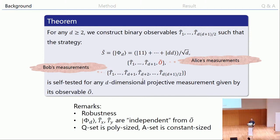I promise the construction is not complicated — everyone can write down the matrix very easily. Another thing to note about this result: we have D+2 observables for Alice (D+2 questions), and approximately D² questions for Bob. So the question set is polynomial in the dimension D. Nevertheless, the answer set is constant size, because all T's are binary observables with only two outcomes, and O-tilde has a fixed number of outcomes.